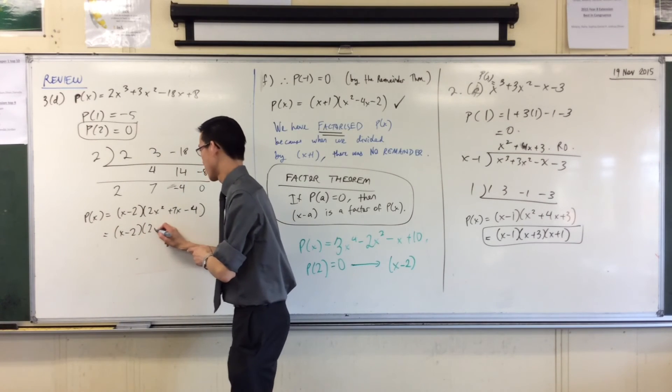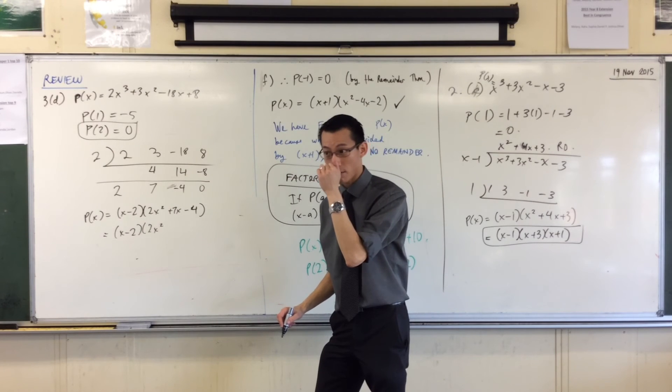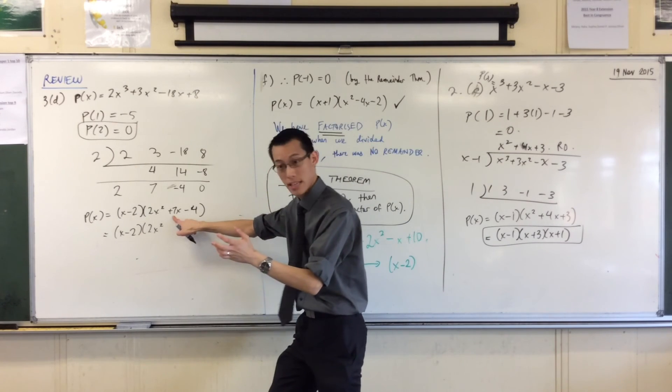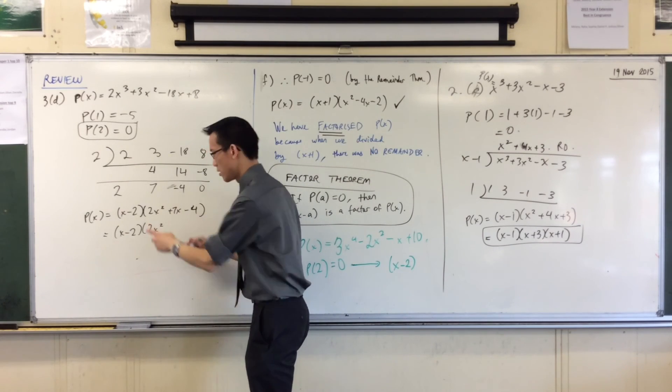Eight and negative one. It looks to me like 8 and negative one. Because you add 8 and negative one, you'll get 7. You multiply 8 and negative one, you'll get negative 8.